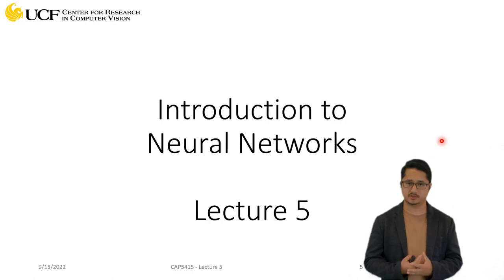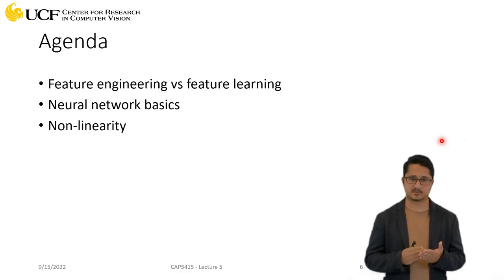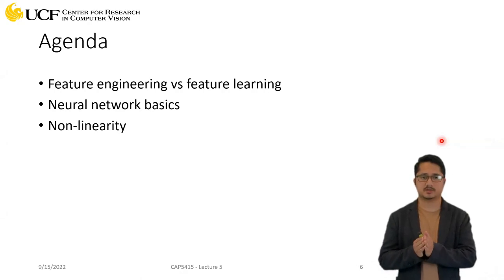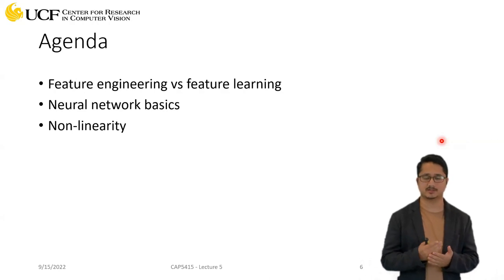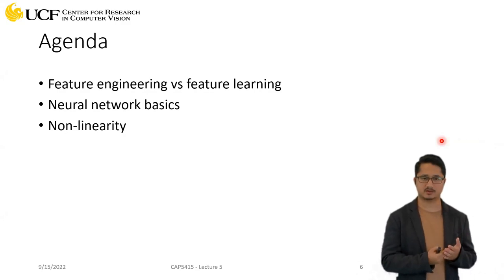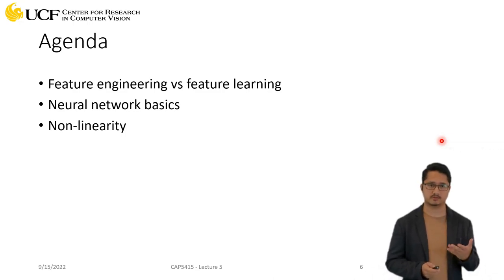Today's lecture is about neural networks. The agenda covers first the motivation for why neural networks are required, addressing two aspects: feature engineering and feature learning. We'll see that some basics of feature engineering have already been covered, and neural networks are key to feature learning, so we'll connect these two concepts and how they're trying to solve the same problem.